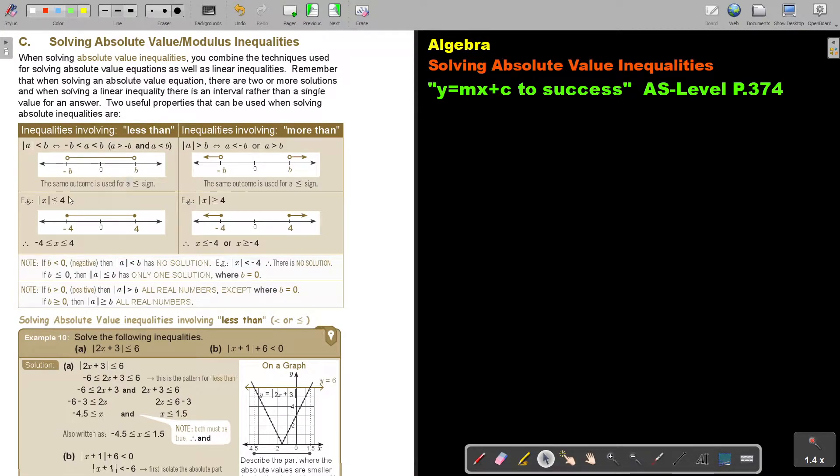Now if there's an equal sign, you just include the value and if there's not an equal sign, you just exclude the value, that value of b.